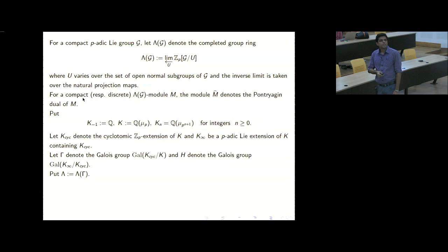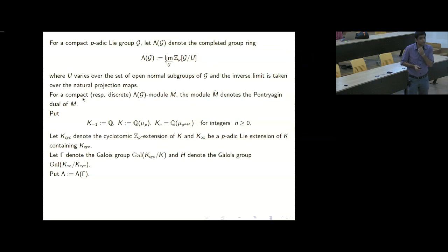These are also called Iwasawa algebras over G. For a discrete or compact module M over Λ(G), M-hat will denote its Pontryagin dual. We also consider a tower of number fields. We have Q, then Q(μ_P), then Q(μ_{P^2}), and so on, calling the union Q(μ_{P^∞}). This is a tower K_0, K_1, K_2, and so on, with limit K_∞.